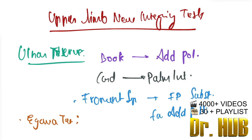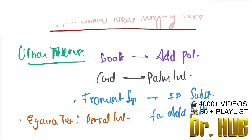The Egawa test measures the dorsal interosseum. So to summarize: book = adductor pollicis, card = palmar interosseum, Froment = flexor pollicis substituting for adductor pollicis, and Egawa = dorsal interosseum. This was all about the ulnar nerve.